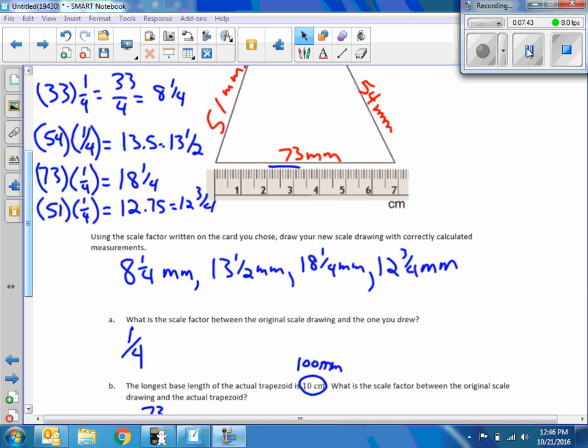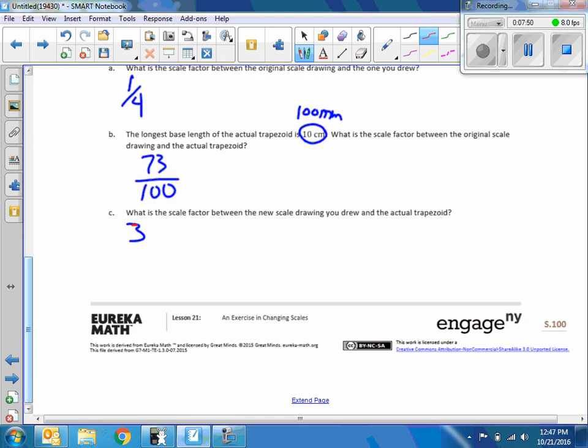We got 18 and a quarter for our scaled measurement, so if I bring this down it would be 18 and one-quarter over 100.